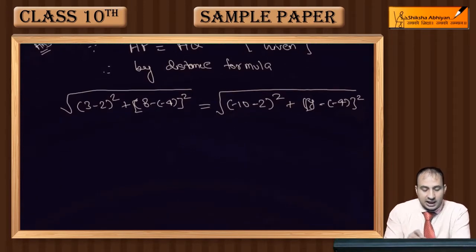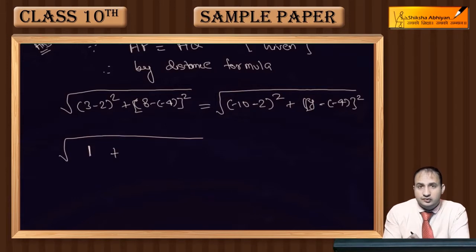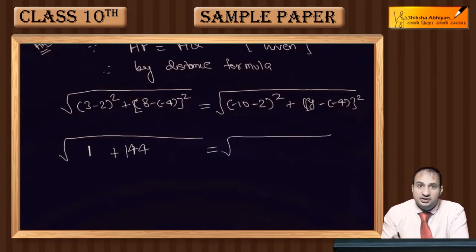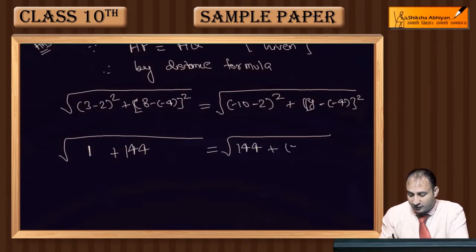Calculation karte hain: (3−2)² = 1² = 1, aur (8+4)² = 12² = 144. Toh AP = √(1 + 144) = √145. Doosri taraf, (−10−2)² = (−12)² = 144, plus (y+4)² aayega.